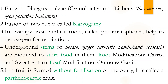Fungi plus blue-green algae — which we also call cyanobacteria — together form lichen. Lichen is also a very good indicator of pollution. When two nuclei fuse together, this is called karyogamy — karyo means nucleus, gamy means to join or form a gamete.